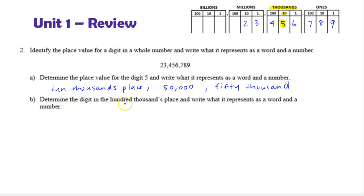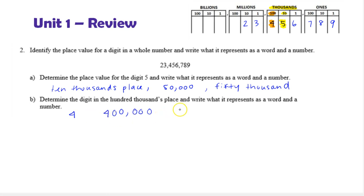Next we're asked to determine the digit in the hundred thousands place and write what it represents as a word and a number. The hundred thousands place is in the thousands grouping, and we can see the digit is four. The four in the hundred thousands place is a four followed by five zeros — 400,000. Notice I put in the comma. So the digit four is representing four hundred thousand. To write that as a word, we write 'four hundred' followed by the grouping 'thousand.'